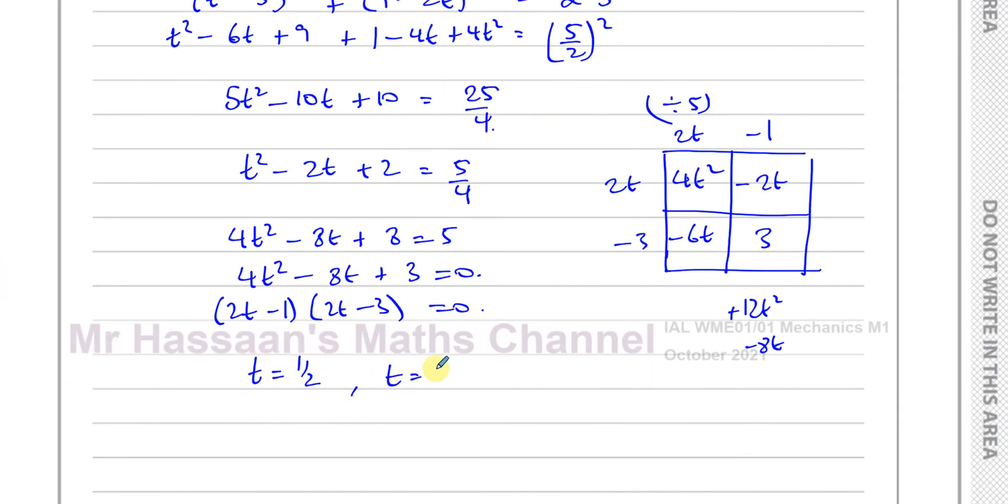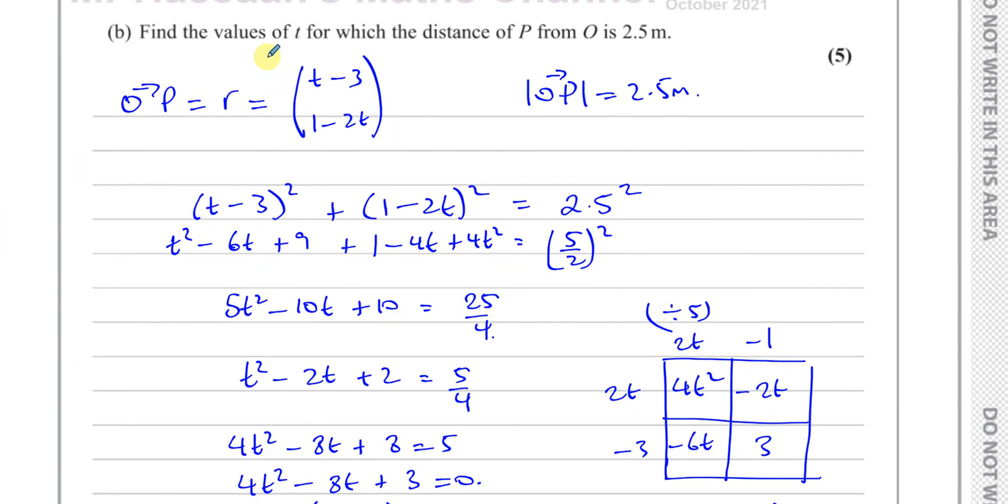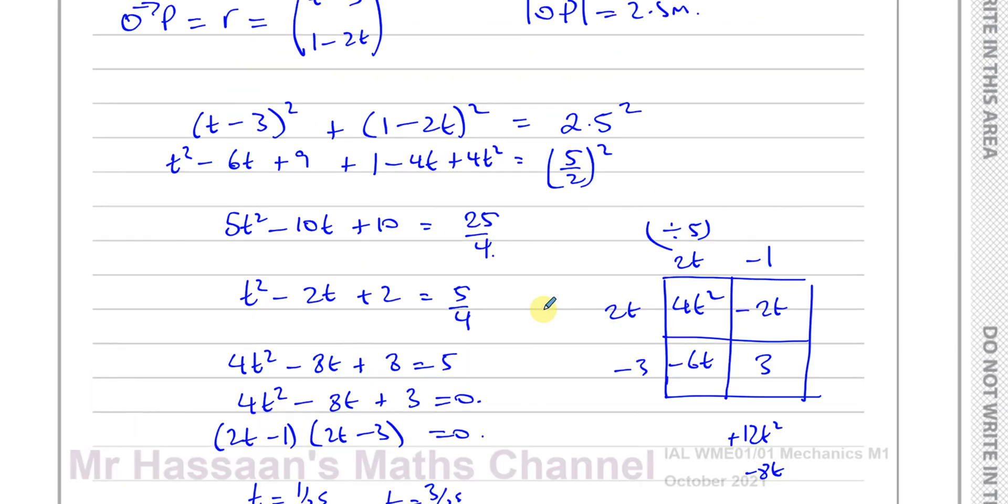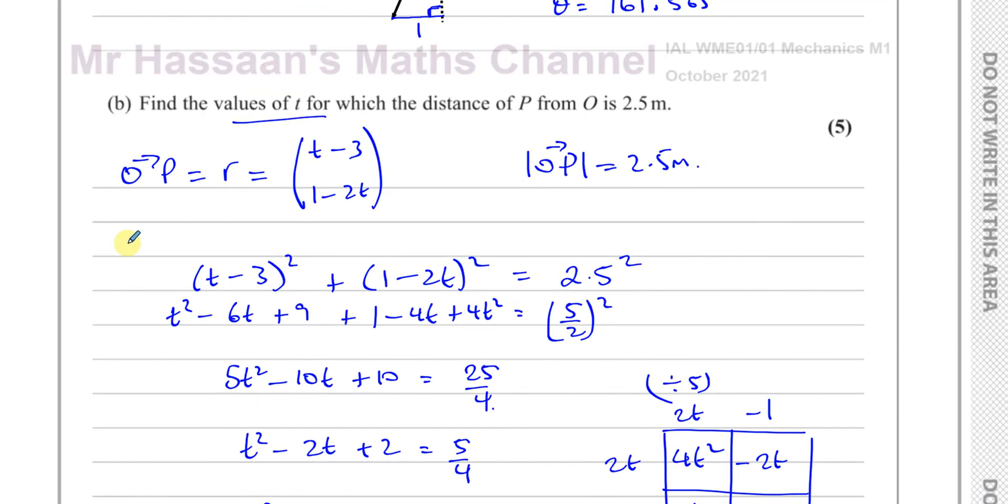You can leave it like a half and 3 over 2, no problem. Those are the values of t for which the distance between the origin and P will be 2.5 meters. So there's the answer for part a and b. I think that's all there is in this question.